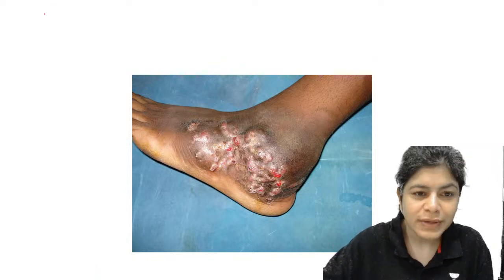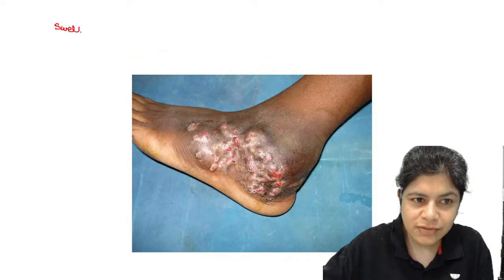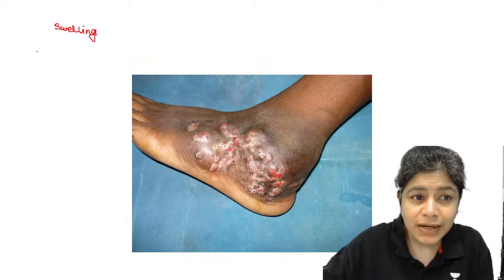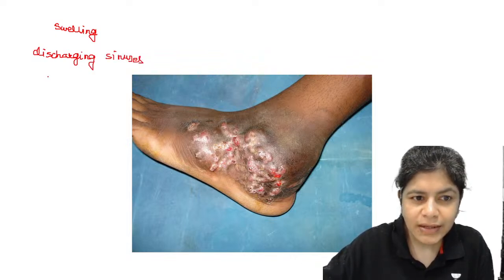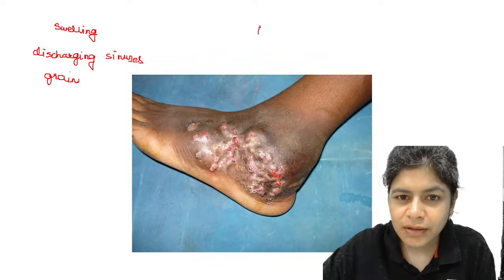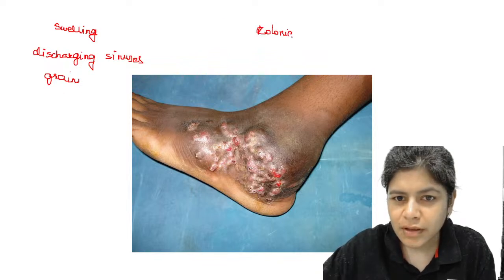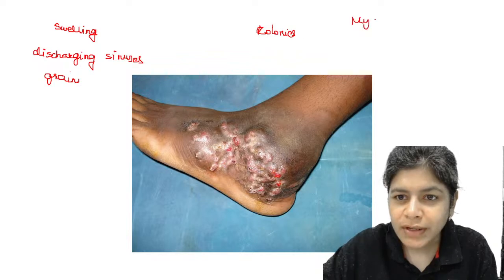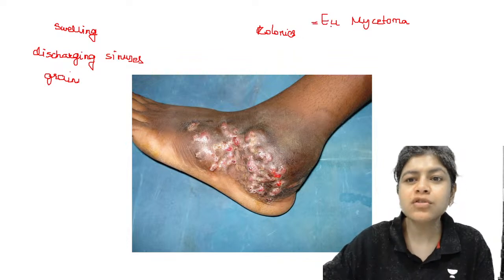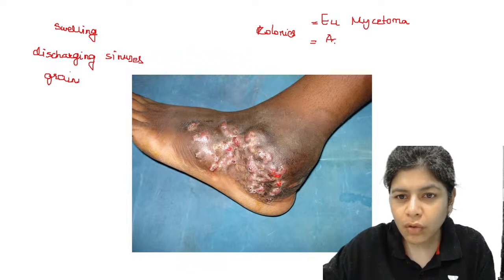The triad of mycetoma is three things: swelling (tumor), discharging sinuses, and grains. Grains are nothing but colonies of the offending organism. Just by looking at it we cannot conclude whether it is eumycetoma, which is a true fungal mycetoma, or actinomycetoma. So when a patient comes with swelling, discharging sinuses, and grains, your differential diagnosis must include mycetoma.